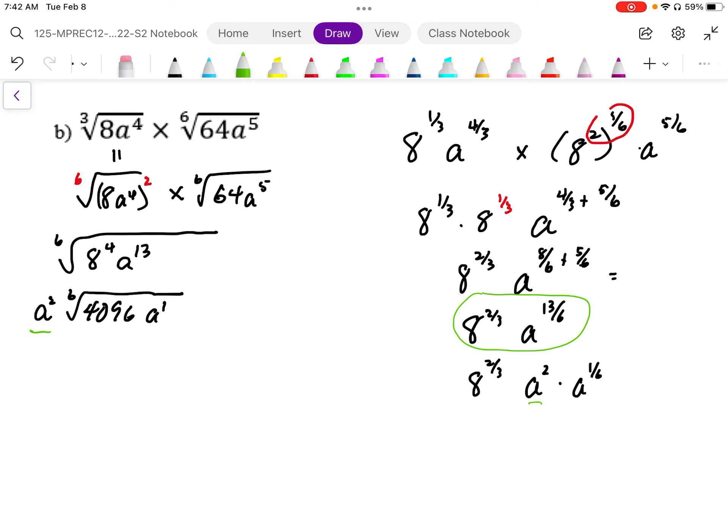And if we actually work out that 8 to the 2 thirds and 4,096 to the 6, you'll see that those are the same number as well.